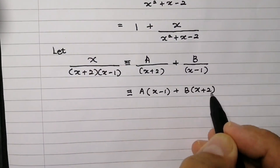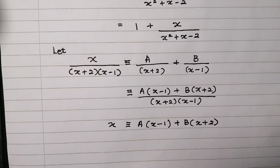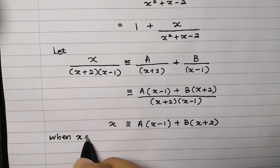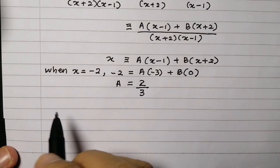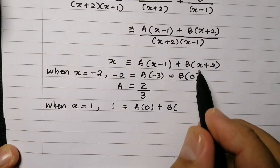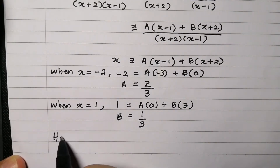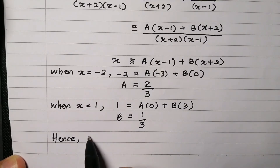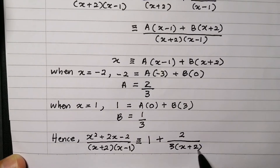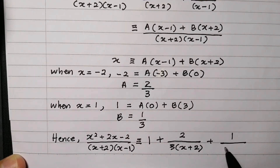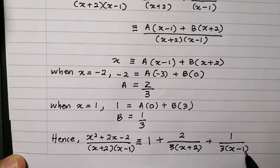Next, express x over (x² + x − 2) into partial fractions. Find the constants A and B by using substitution. We get A = 2/3 and B = 1/3. Hence, express the given rational function in partial fractions using the values of A and B.